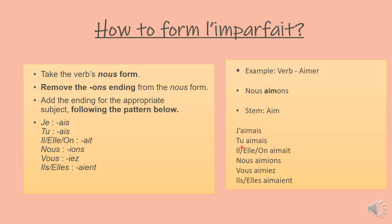With je it's j'aimais, tu aimais, il ou elle ou on aimait, nous aimions, vous aimiez, ils ou elles aimaient. You can probably pause the video or go back and repeat after me.